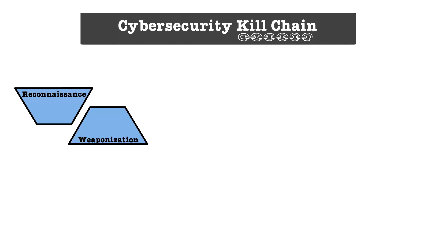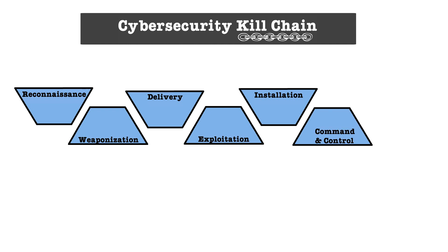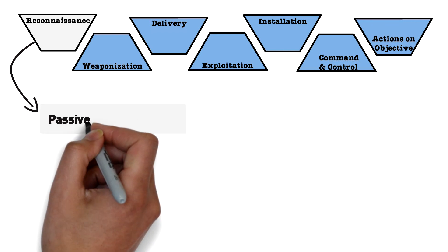The Cybersecurity Kill Chain by Lockheed Martin walks us through the seven sequential steps an attacker will commonly follow during an attack. In my previous video, we took a look at how the entire process usually starts with open source intelligence, or OSINT for short.